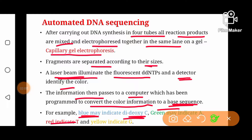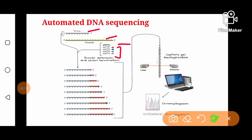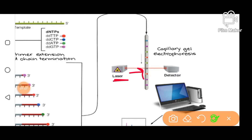Likewise, green color may indicate adenine, red may indicate thymine, and yellow indicates guanine. You can see here how automated DNA sequencing actually works. These are the various components: the template DNA, the primer, dNTPs (normal DNA nucleotides), and ddNTPs tagged with specific fluorescent molecules. After carrying out reactions in four separate tubes, the products of all reactions are mixed and run through capillary gel electrophoresis. At the base, a laser source is placed which illuminates the fluorescent molecules on the ddNTPs.